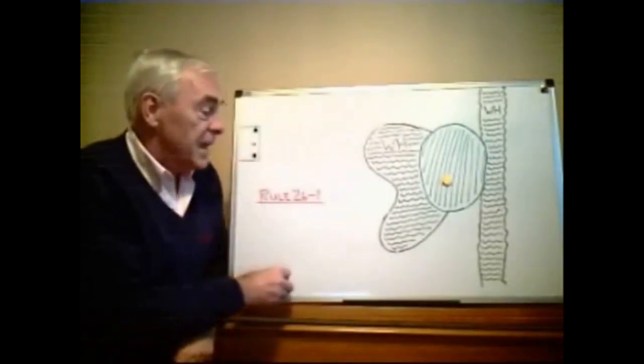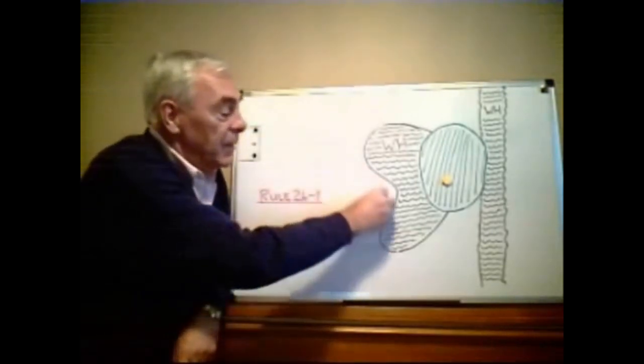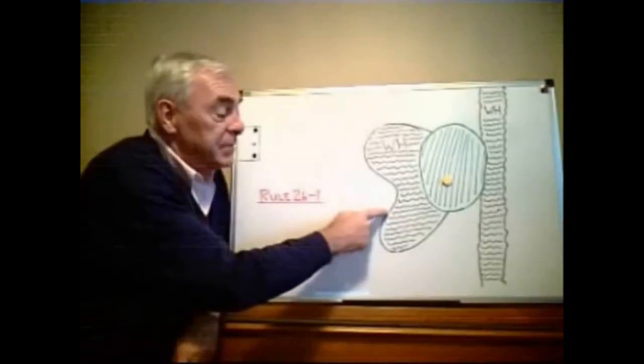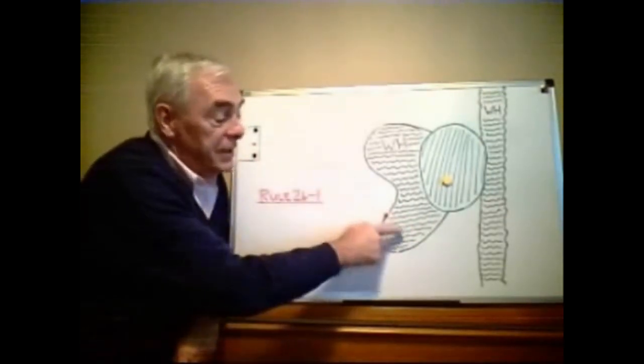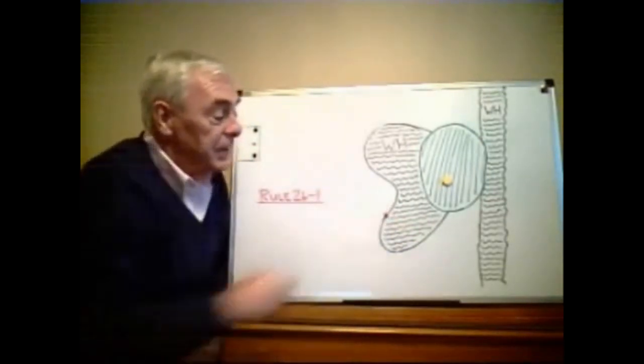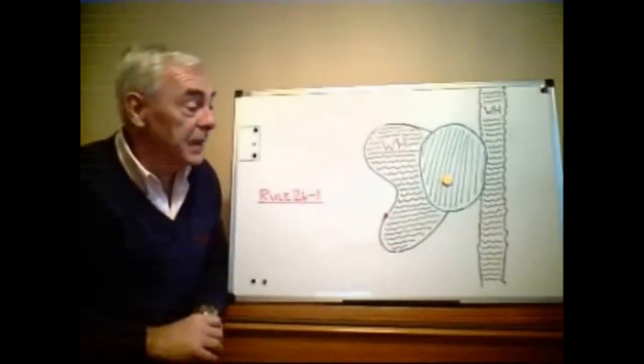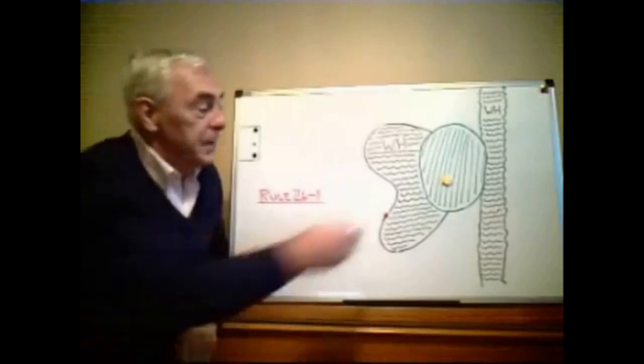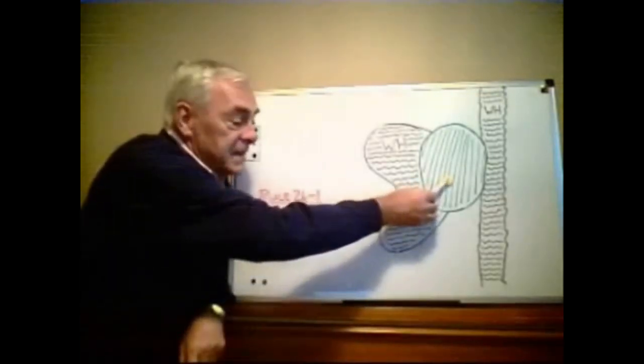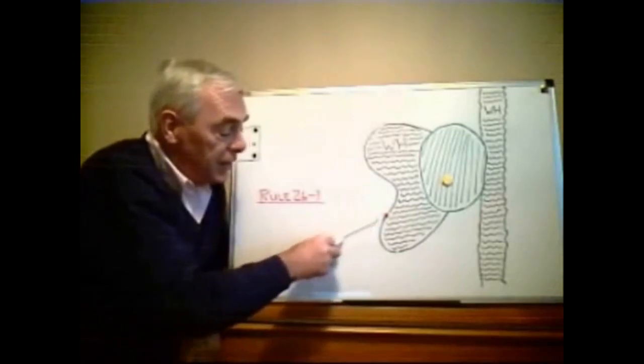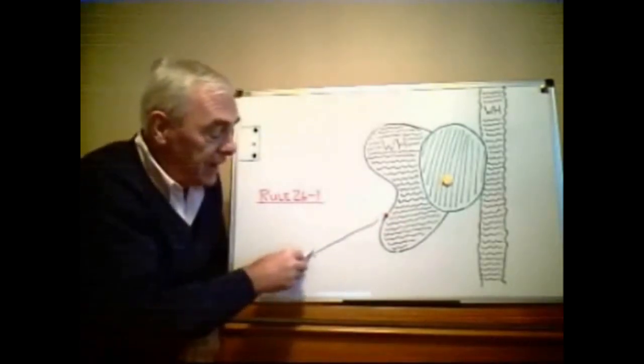In the first scenario the ball was played, it was sliced badly and it went into the water entering the water here. This is the point where it last crossed the margin of the hazard and it's this point which is the reference point for the line that they have to drop their ball on for relief. The line goes from the flagstick through where the ball last crossed the margin of the hazard and you can go back as far as you like along that line.